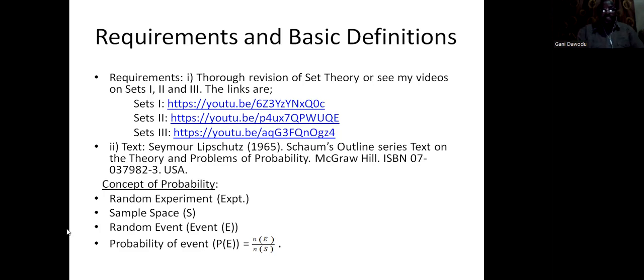Now sample space, the list of all probable outcomes of a random experiment. Random event, that's a subset of the sample space. Any subset of the sample space that is of interest to us. The probability of the event, that's a numerical value that quantifies the chances of occurrence of the event. Later you will find that that's cardinality of the event over cardinality of the sample space.